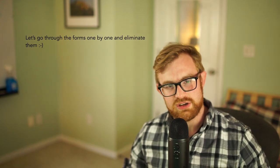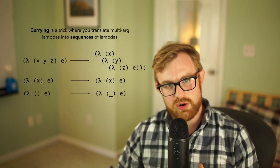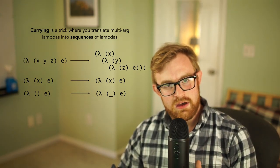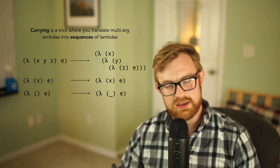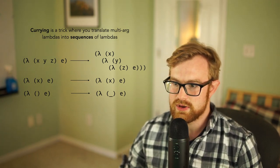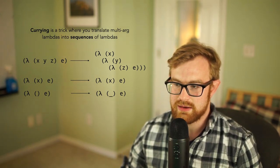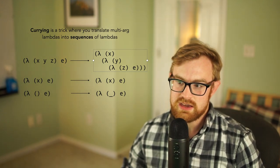So let's go through the forms one by one and just talk to you about how to translate them. So the first one is currying. Currying is a trick where you can take a lambda that has some number of arguments, some fixed number of arguments like a three-argument lambda, and translate that into a sequence of three lambdas. So if I have three arguments, I can translate that into lambda x which hands me back lambda y which hands me back lambda z, which then the body has x, y, and z all in scope.